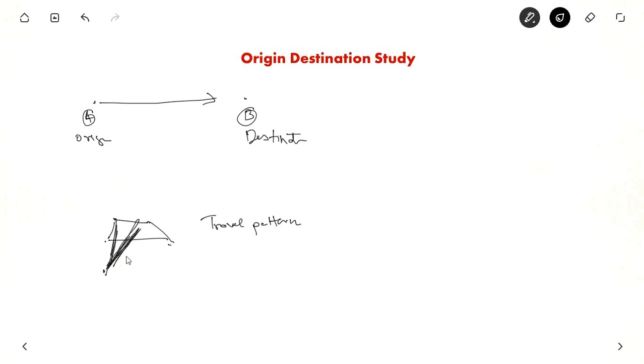This is represented, OD study is represented by desire lines. So if 100 people go from this point to this point, the thickness is very high when compared to only 5 people going from here to here. So graphically OD is represented by desire lines.